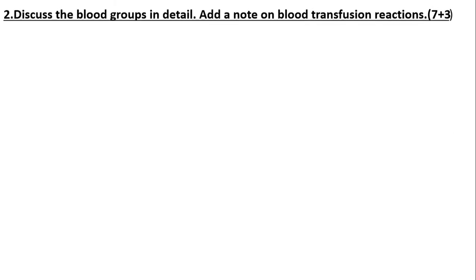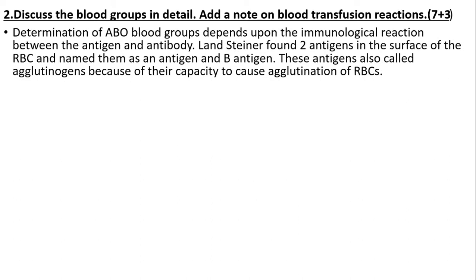Second question: discuss blood groups in detail and note on transfusion reaction. Determination of ABO blood groups depends upon the immunological reaction between antigen and antibody. Landsteiner found two antigens in the RBC named as antigen A and antigen B. These antigens are also called agglutinogens because of their capacity to cause agglutination of the RBC.